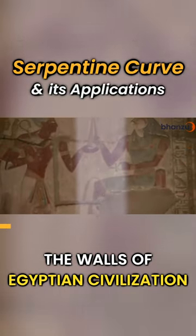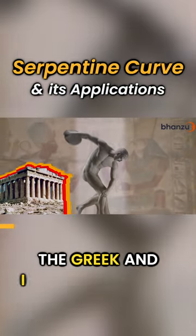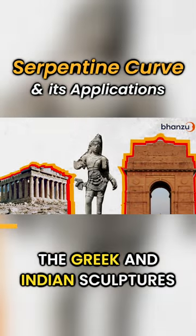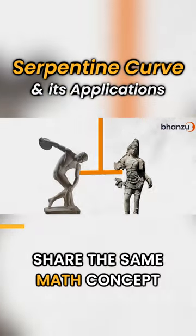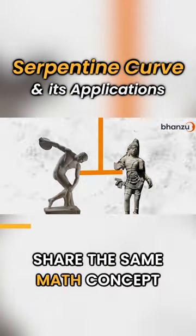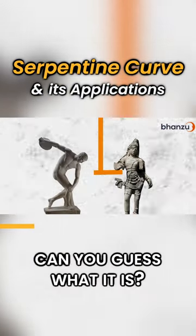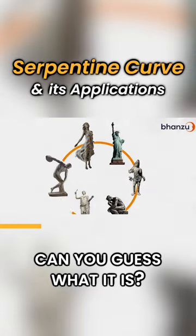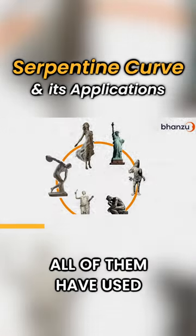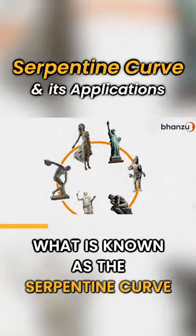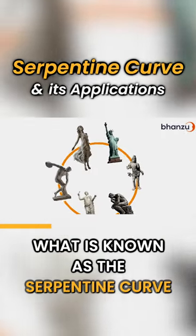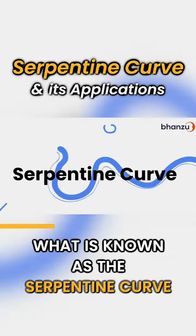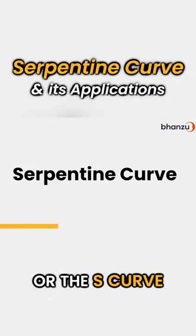The walls of Egyptian civilization, the Greek and Indian sculptures share the same math concept. Can you guess what it is? All of them have used what is known as the serpentine curve or the S-curve.